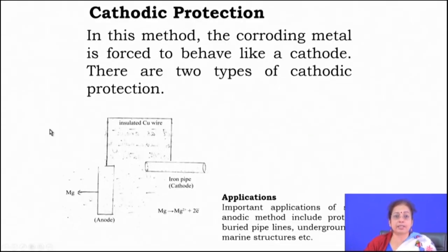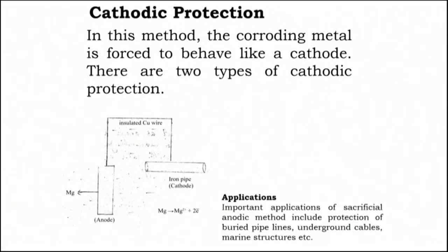The second technique is cathodic protection, which can be widely applied for protection of surfaces against aqueous corrosion. Cathodic protection is a technique where you make the component of your choice act as a cathode. This can be done in two ways: first, by connecting it with another material that is more anodic to a large extent.